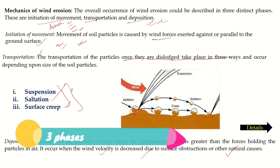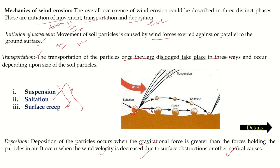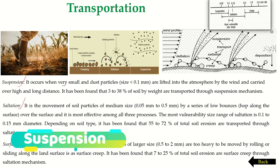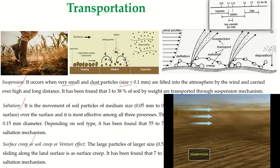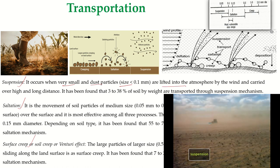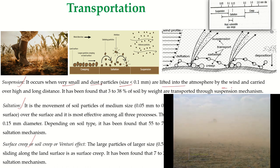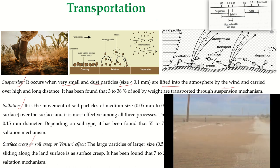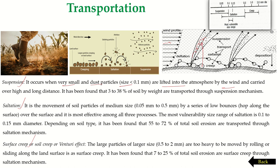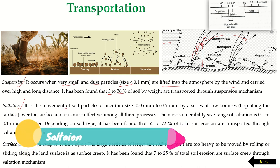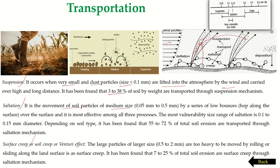Suspension occurs when very small or fine particles less than 0.1 mm in size are lifted into the atmosphere by wind and carried over long distances and high altitudes. The very fine particles, due to wind velocity, are lifted into the air and transported over a long distance. Laboratory findings show that 3 to 38 percent of soil weight may be transported through the suspension process.